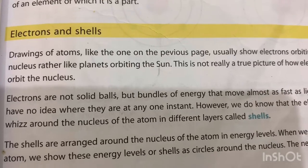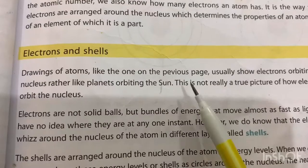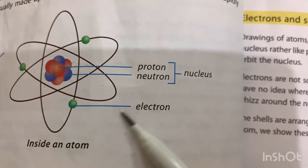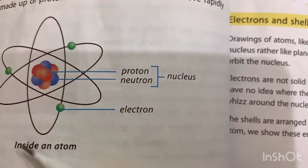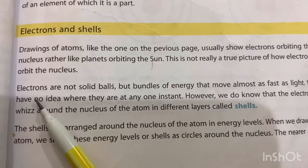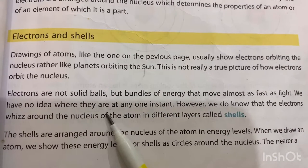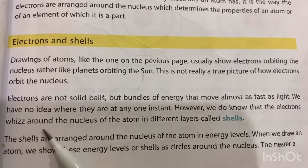Moving on to electrons and shells: drawings of atoms usually show electrons orbiting the nucleus. However, this is not really a true picture of how electrons orbit. Electrons are not solid balls but bundles of energy that move almost as fast as light. We have no idea where they are at any one instant. However, we do know that electrons move around the nucleus of atoms in different layers called shells.